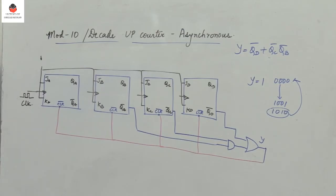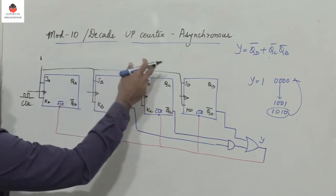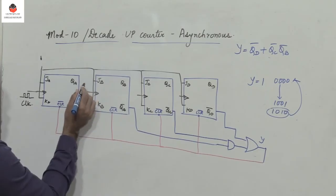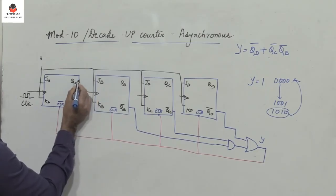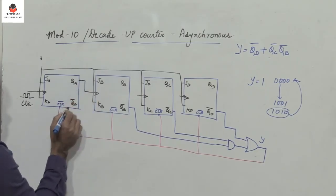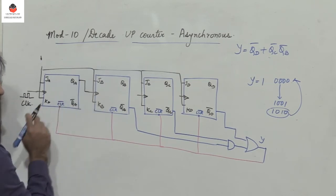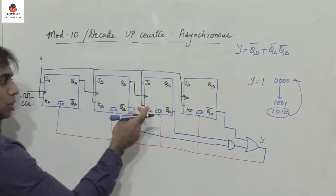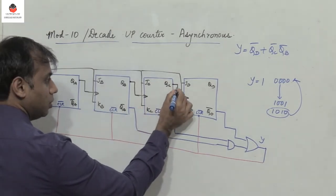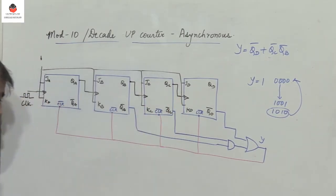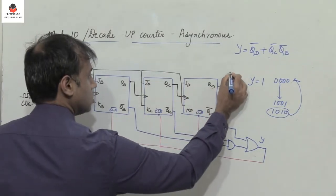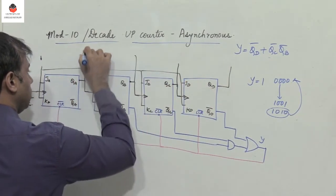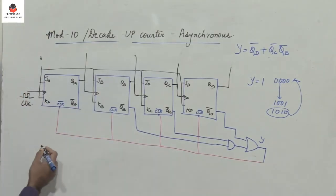We take the outputs at QA, QB, QC, and QD. Since this is an asynchronous counter, the output QA becomes the clock input to the next flip-flop, QB becomes the clock input to the following flip-flop, and QC becomes the clock input to the fourth flip-flop.